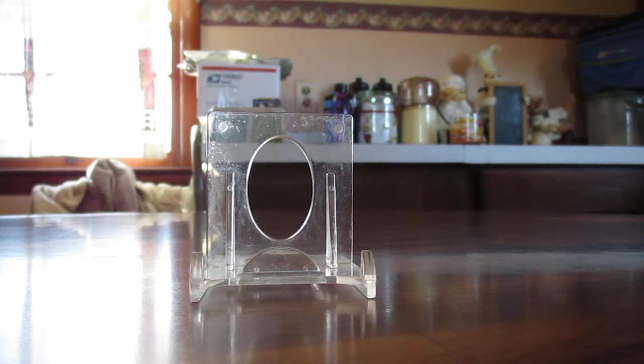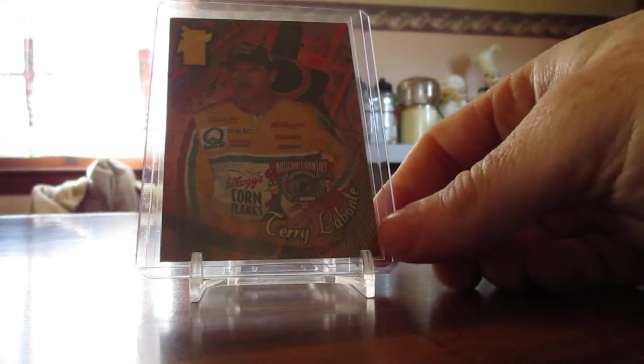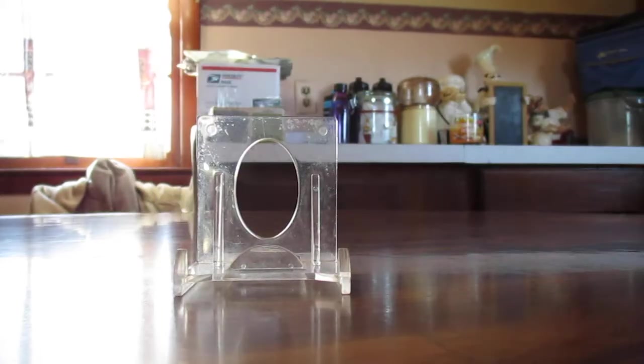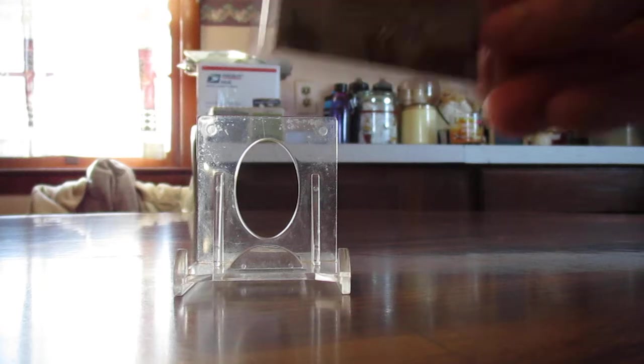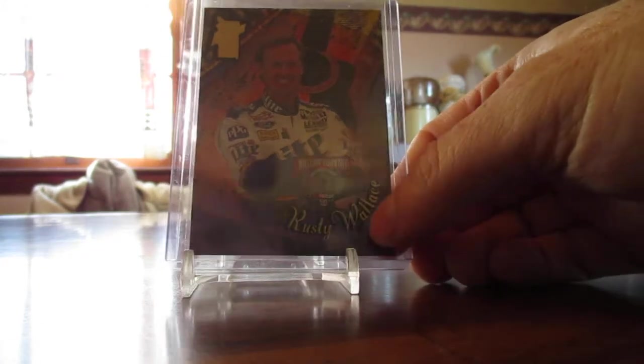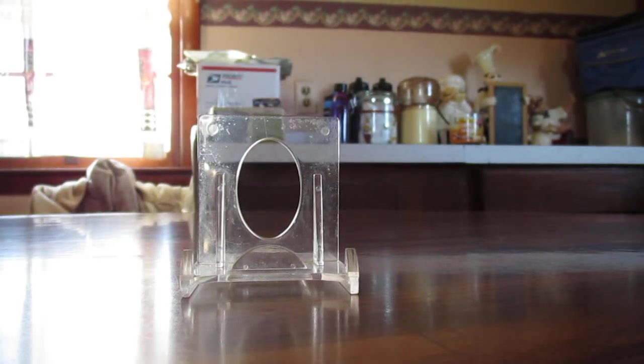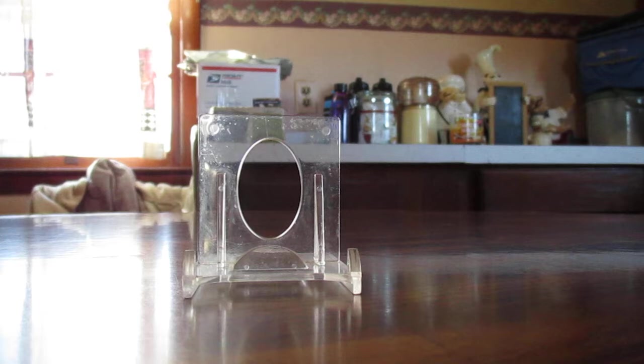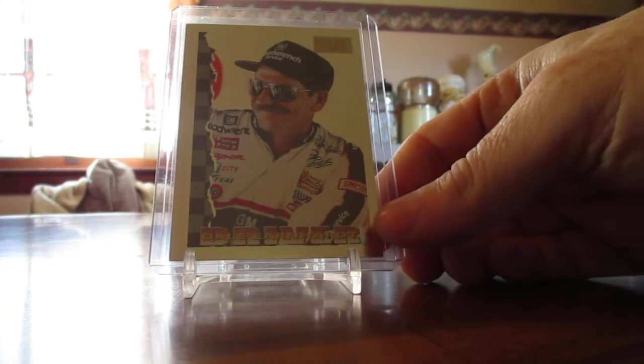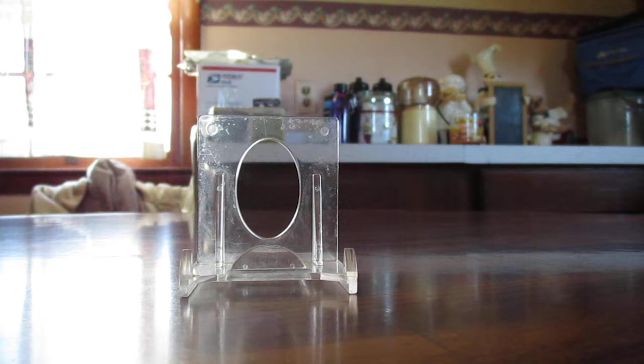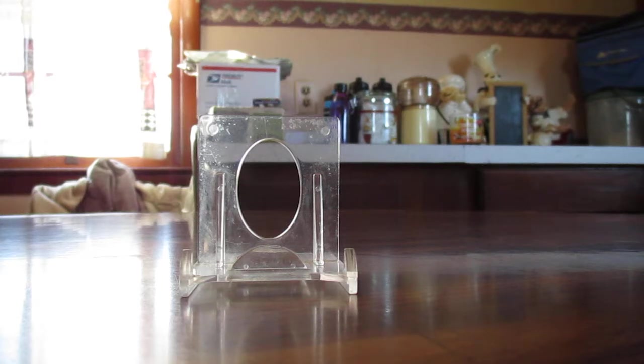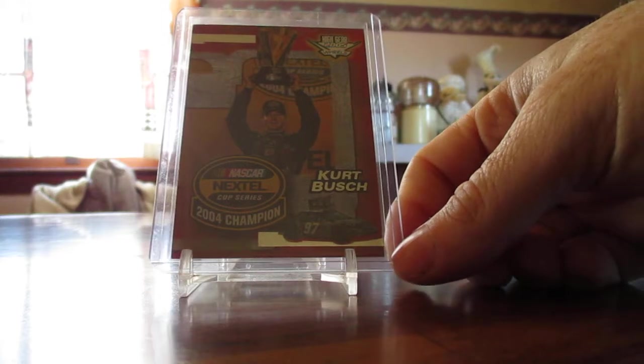And we got some NASCAR country cards. We got Terry Labonte. Got Awesome Bill from Dawsonville, Bill Elliott, and Rusty Wallace. Got a Mark Martin Images preview card. We got a couple Speedway collections from Racers Choice. Dale Earnhardt there, and another Dale Earnhardt, and a Kurt Busch Zero card of Wheels High Gear.